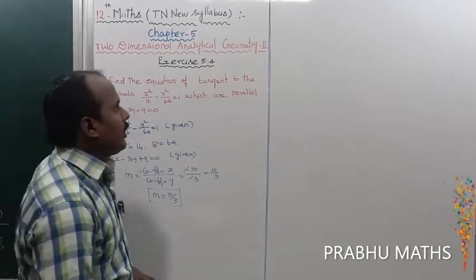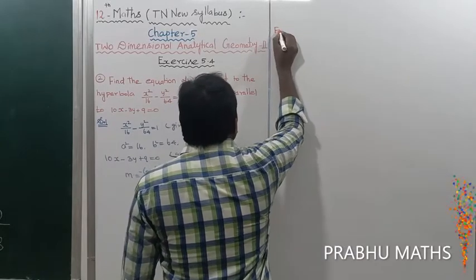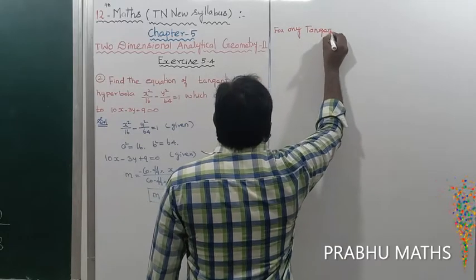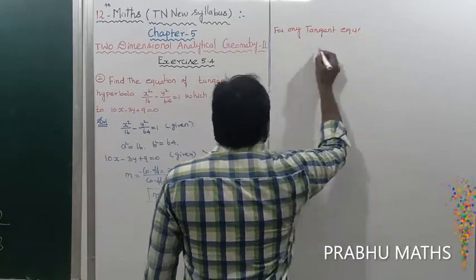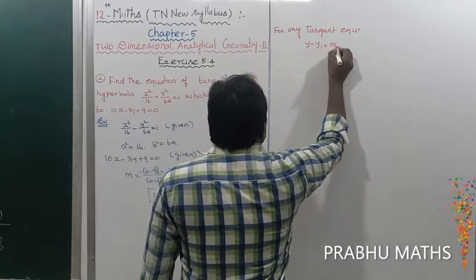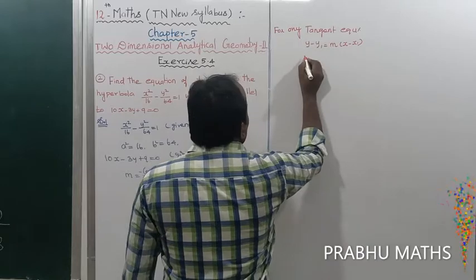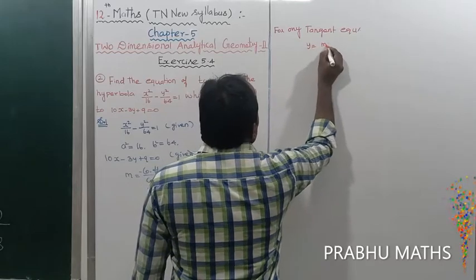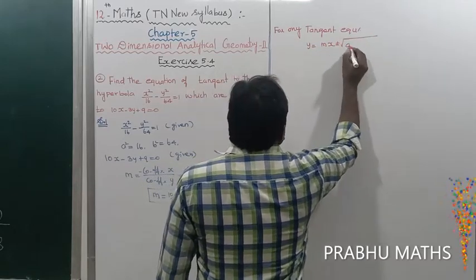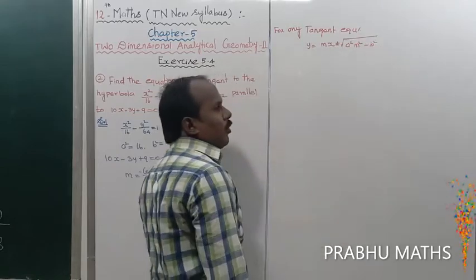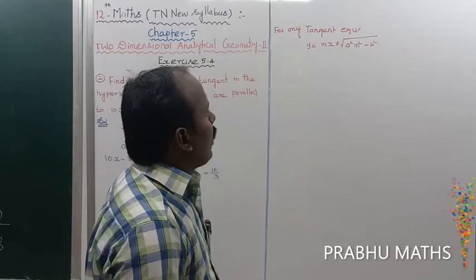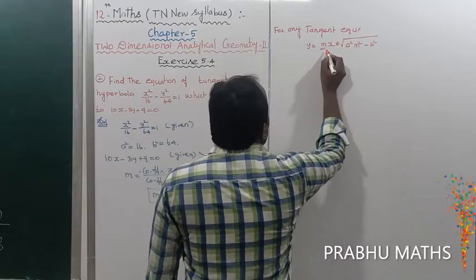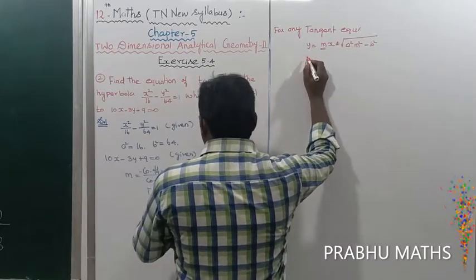Now apply the formula. For the hyperbola, the tangent equation is y = mx ± √(a²m² - b²). Note: for ellipse it is a²m² + b², for hyperbola it is a²m² - b². The value of m is 10/3.